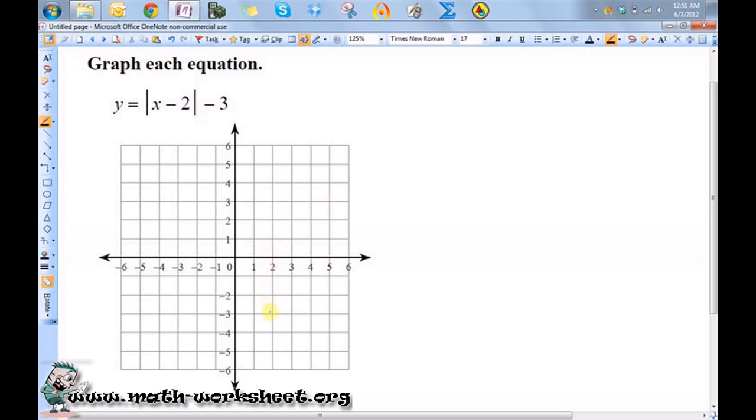But then the negative 3 means I need to go down 3. So the V is originally centered here, so I'm going to go over 2 and down 3.